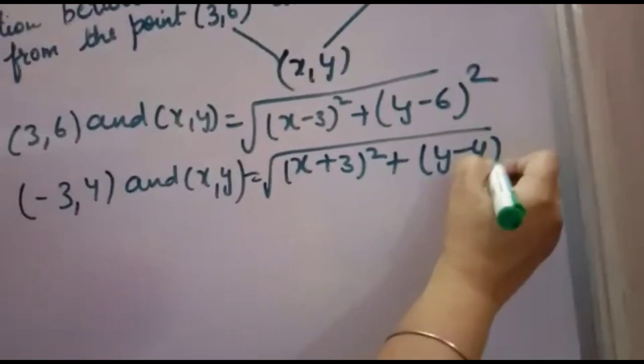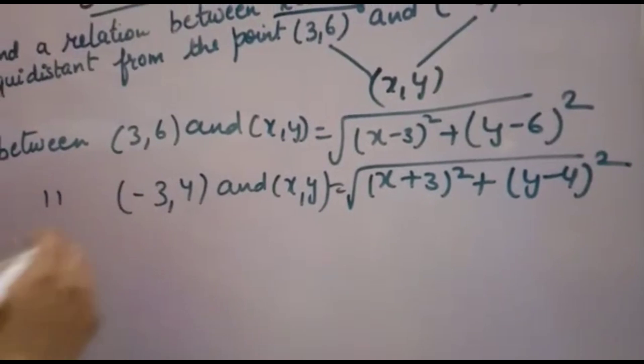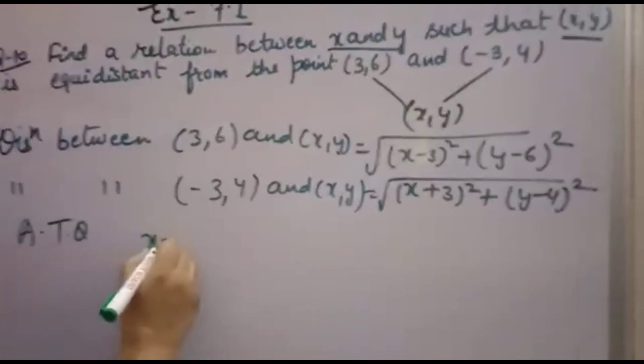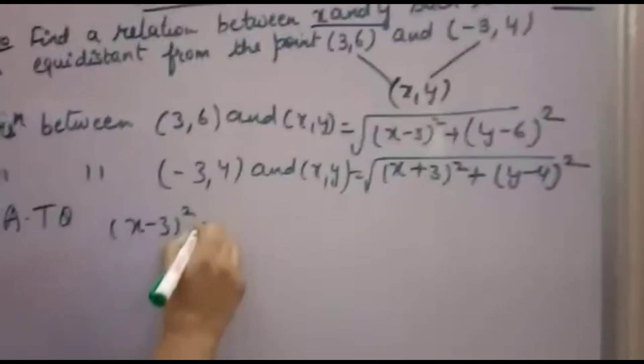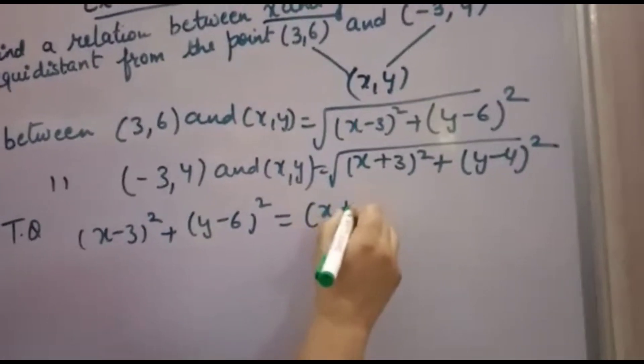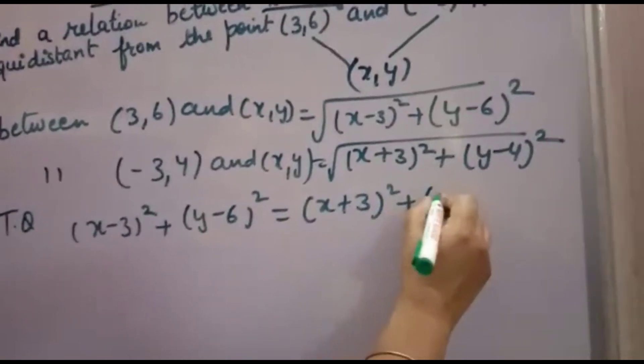Now equidistant means both are equal. That means according to the question, (X minus 3) whole square plus (Y minus 6) whole square equals (X plus 3) whole square plus (Y minus 4) whole square.